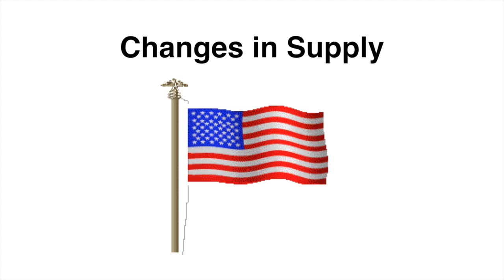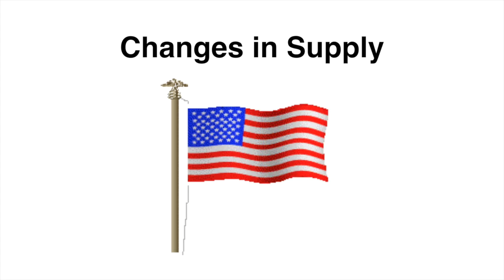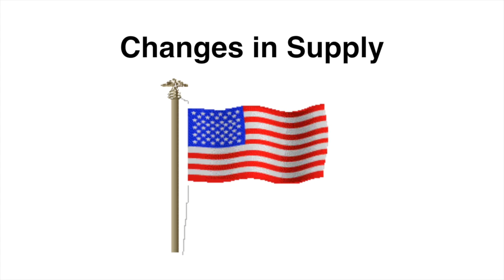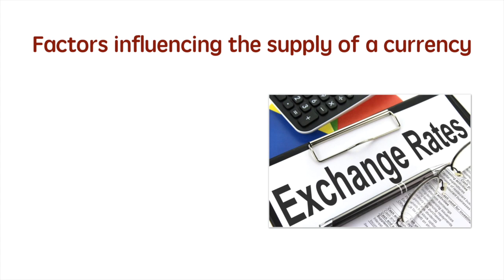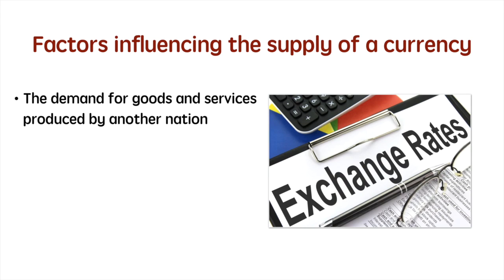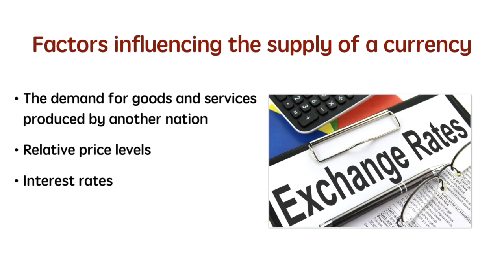Next, we will examine changes in supply. Once again, we will continue with our UK and US example. Since we are discussing the market for dollars, the US is on the supply side as obviously dollars originate from the US. Essentially, all the factors that influence demand for the dollar affect the supply of the dollar as well. To understand why, you have to remember that the demand for the dollar is met by supplying the pound. Therefore, if Americans increase their demand for the pound, they must supply dollars in exchange. The same factors we listed earlier can be applied to Americans supplying the dollar on the foreign exchange market too.